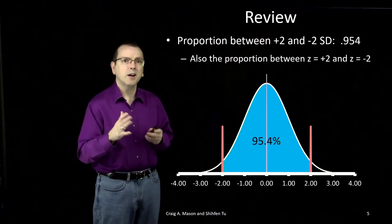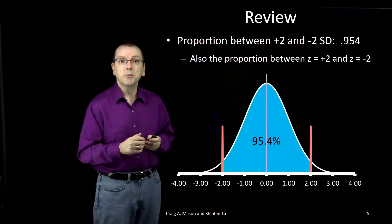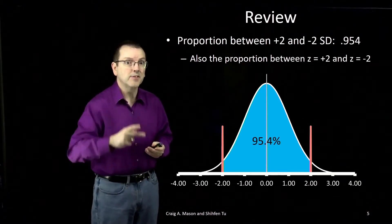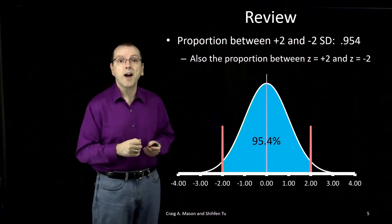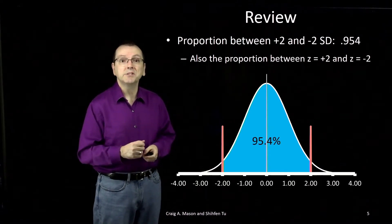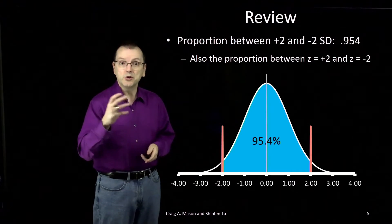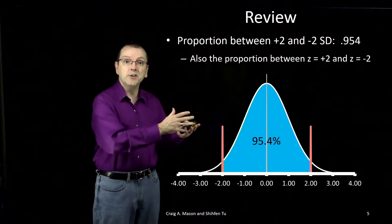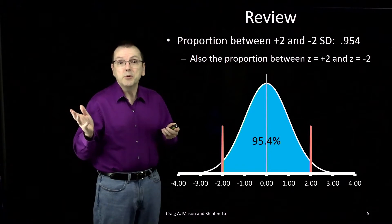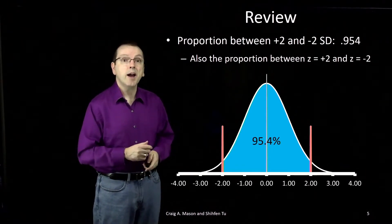Likewise, we also saw that the area under the normal curve between plus and minus two standard deviations was 0.954, or 95.4% of the normal distribution was between two standard deviations above the mean and two standard deviations below the mean — between a z of plus two and a z of minus two.